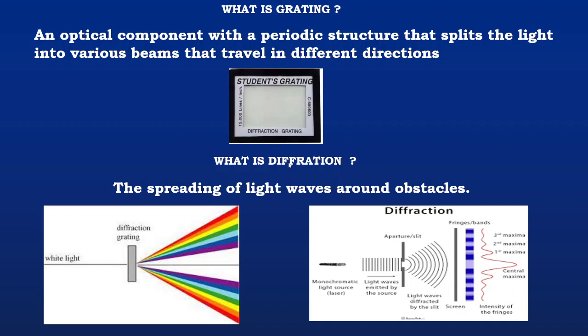What is grating? An optical component with a periodic structure that splits the light into various beams that travel in different directions. So this is the grating.